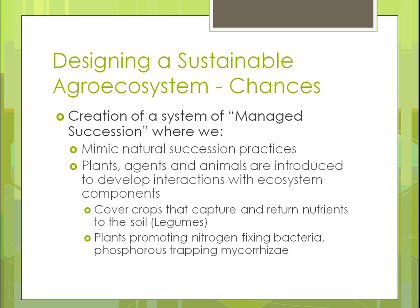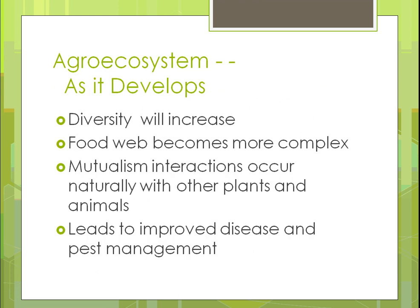We can also plant crops that promote nitrogen-fixing bacteria or phosphorus-trapping microorganisms that benefit the plants we're trying to grow, since different plants have different needs. As we develop the system, if it's working right, diversity will increase and the foods produced become more complex. That leads to mutualism — two things working in conjunction, benefiting each other — and letting that happen naturally will produce those interactions on its own.